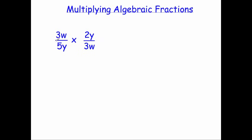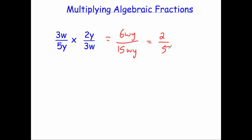Next question: we have 3W over 5Y times 2Y over 3W. We can just multiply: 3 times 2 is 6, W times Y is WY. On the denominator, 5 times 3 is 15, and Y times W in alphabetical order is WY. Now 6 and 15 will cancel down — both are in the 3 times table, so that gives 2 over 5. W divided by W cancels out, and Y divided by Y cancels out. So our answer is just 2 fifths.